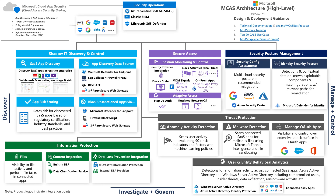Once I collect the data, MCAS will perform app risk scoring on it. For the apps detected in use in my environment, it will help me understand on a scale of 1 to 10 — with 1 being the most risky and 10 being the least risky — what the risk level is of that app. From there, I can make an intelligent decision: do I want to allow the app or block it? I can block it using several methods: Microsoft Defender for Endpoint can block the app on the device, I can create a script directly out of MCAS to run in my firewall, and there are integrations with those secure web gateways to block app usage.